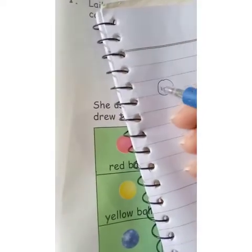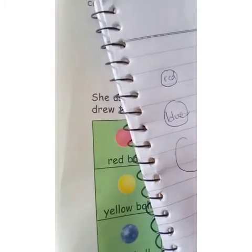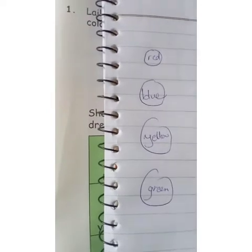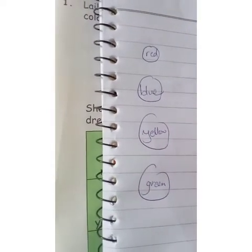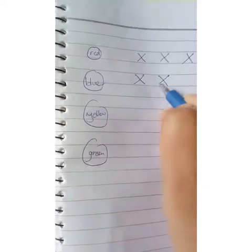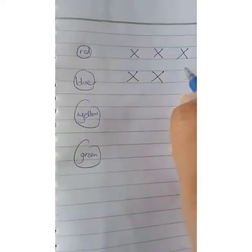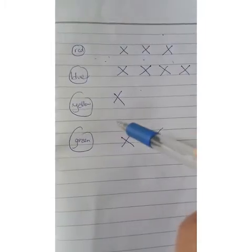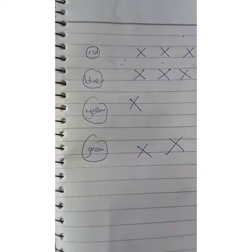Here we have red, blue, yellow, and green. For example, if I had 3 red balls I will put 3 crosses for red. If I have 5 blue balls I will put 5 crosses — just as an example, not the book. If I got only 1 yellow ball, one cross, and if I got 2 green balls, two crosses. This is how you can make your own picture graph.